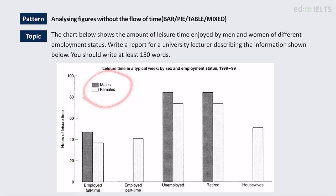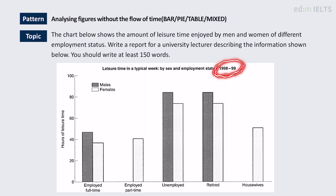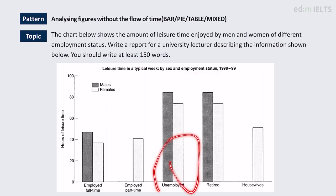It shows figures for males and females — how much leisure time they enjoy in a typical week, so how much free time they have basically. It covers either a one-year or two-year period, depending on how you interpret it, but a time in the past. And it's looking at various employment statuses, including unemployed as a status for employment — so general employment situations.